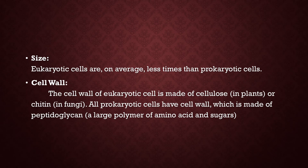The next difference is cell wall, which is a major difference between prokaryotes and eukaryotes. The cell wall of eukaryotic cells is made of cellulose in plants, because animal cells lack a cell wall, and the cell wall of fungi is made up of chitin. All prokaryotic cells have a cell wall.